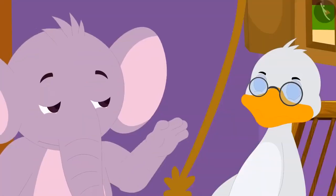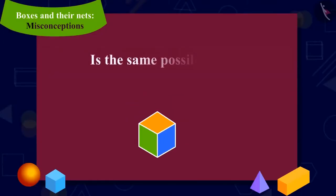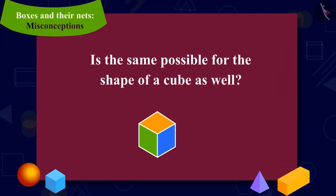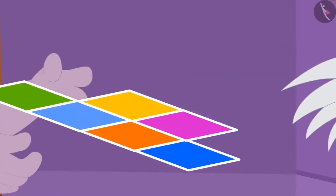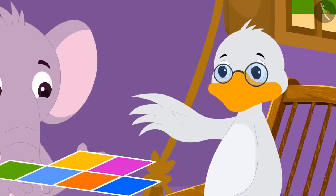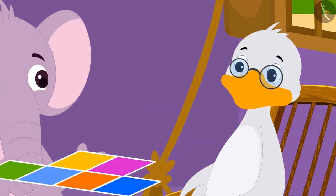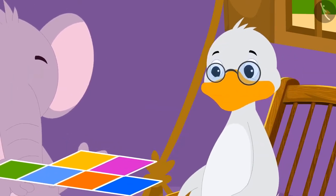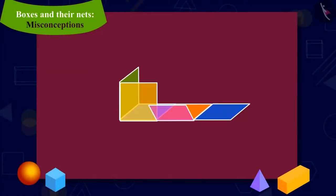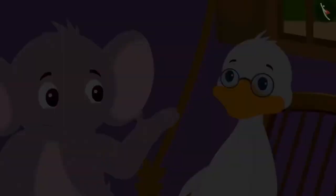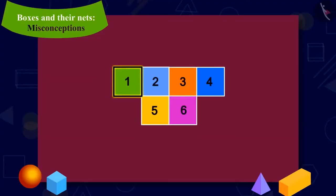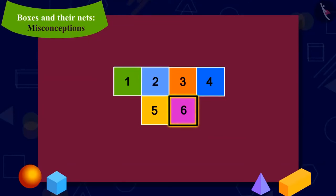Appu was shocked. He asked Babu Uncle, is the same possible for the shape of a cube as well? Then Babu Uncle made a shape like this on a thick paper and gave it to Appu. He asked Appu to fold this net. Let's see how Appu is folding it. Appu was once again shocked. This figure did have six surfaces and all the surfaces were square. Yet, I could not make a cube from it.